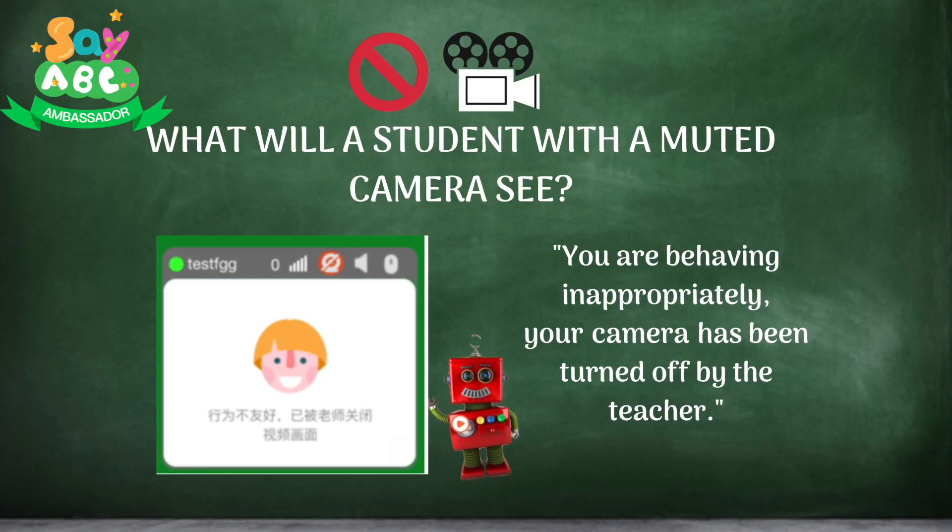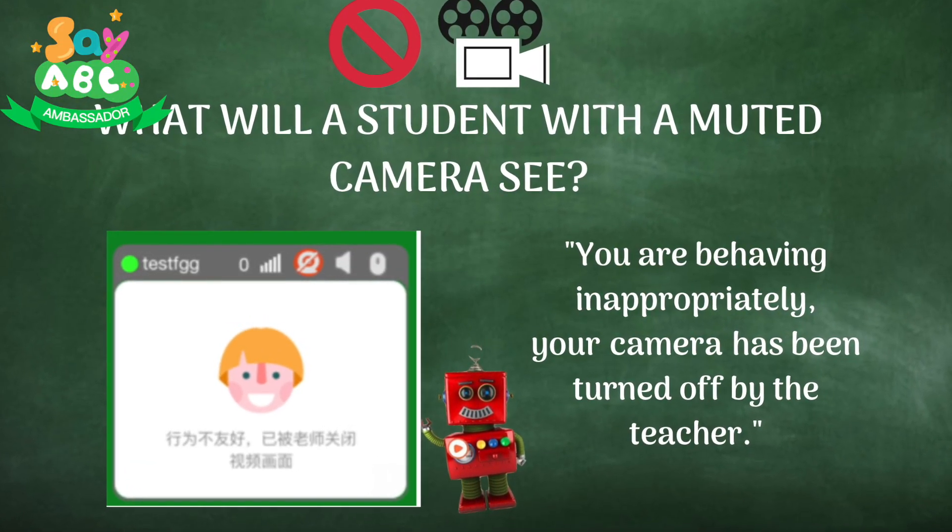When you turn off the camera, I wouldn't draw attention to it — just turn it off and move on. On the student's end, a message in Chinese will appear saying they are behaving inappropriately and their camera has been turned off by the teacher. You don't need to explain it yourself. For bathroom situations, if I know a student is going, or mom says they are, I'll say 'okay, I'm going to turn your camera off for five minutes, see you in a bit,' then just turn it off and move on. Use your discretion on whether to turn it back on or leave it off for the whole class.